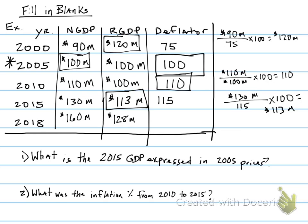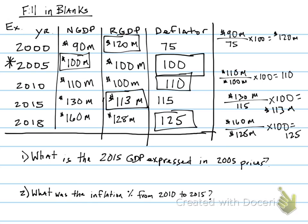Last, we need to calculate the GDP deflator for 2018. My formula is nominal divided by real, times 100. I've got a nominal of $160 million and a real of $128 million, times 100, and that gives me an answer of 125. So my deflator for 2018 is 125. Now I have filled in the table using my two formulas to calculate real GDP using the deflator, and using nominal and real to calculate the deflator.